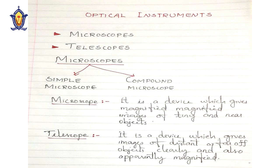We are going to discuss microscopes and telescopes. These are two optical instruments which help human eyes — microscopes help in observing highly magnified images of tiny objects, and telescopes are used for observing very far off or very distant objects.